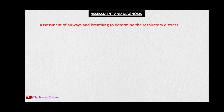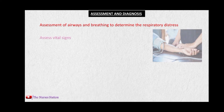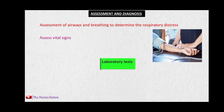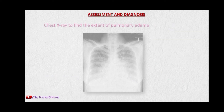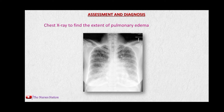To diagnose pulmonary edema, we can assess the patient's airways and breathing pattern to determine respiratory distress, and assess the vital signs. Laboratory tests include arterial blood gas analysis to determine the levels of oxygen, carbon dioxide, and bicarbonates in the blood, electrolyte analysis, blood urea nitrogen, and creatinine tests. A chest X-ray can also be used to find the extent of pulmonary edema inside the lungs.